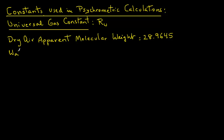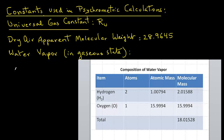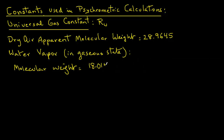Now water vapor, which is in gaseous state — since that is what we are going to be looking at — water vapor has hydrogen and oxygen. Using the molecular mass of these two constituents of water vapor, the molecular weight of water is 18.01528.